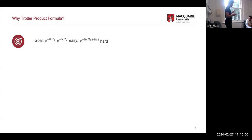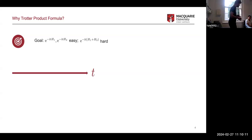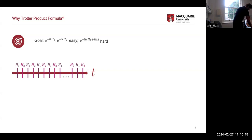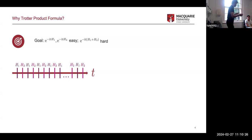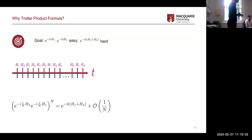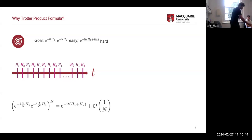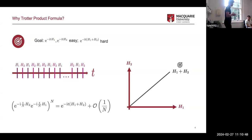The idea behind trotterization is the following: we can implement time evolution under H1 very easily, and we can implement time evolution under H2 very easily, but the sum is very difficult. So what we do is take the total evolution time, split it into small pieces, and in each piece we evolve under H1, then under H2, alternating between them very quickly. Mathematically you get this formula: time evolution under H2 and H1 repeated, and that converges to the actual time evolution up to some error that scales as 1/n.